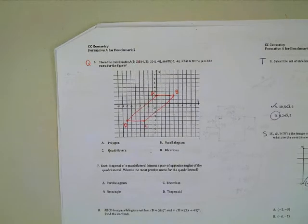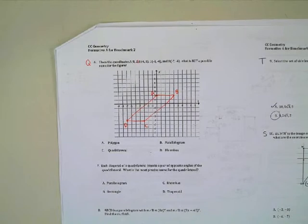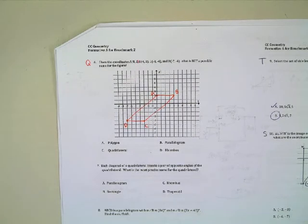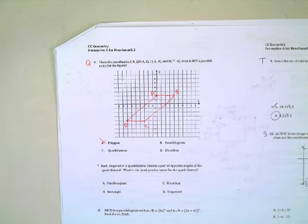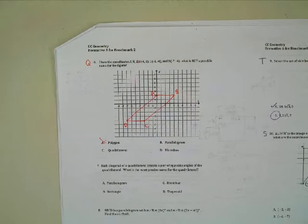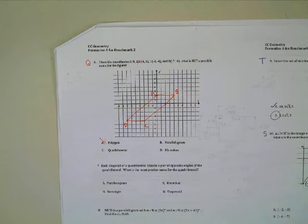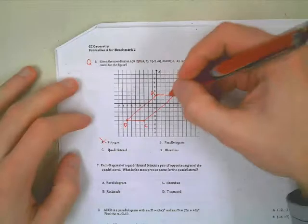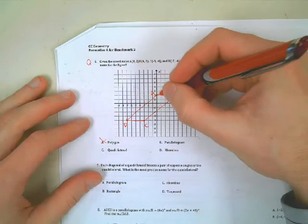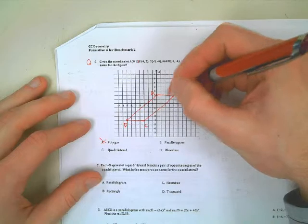So there's our shape. Looking at that, again, we're trying to come up with which one is not a possible name for the figure. Can we call this thing a polygon? Absolutely. So A is not the answer because we're looking for something we cannot call it. What about B — can we call this a parallelogram? It looks like it, doesn't it? How can we check it? The slopes from A to B and from D to C — that's pretty clear, it's zero. You're not rising at all, it's a run of four, so it's zero over four, which is just zero.